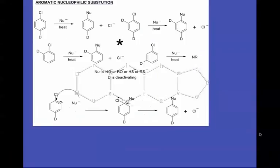Let's look at some aromatic nucleophilic substitution processes. Up to this point, we've been dealing with electrophilic substitutions mainly, and the electrophilic substitutions had something positive attacking the ring. We can also have something negative attack the ring, as long as we have some specific conditions on the ring in place.